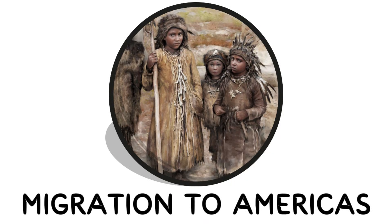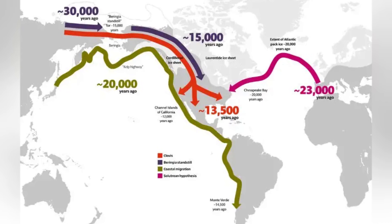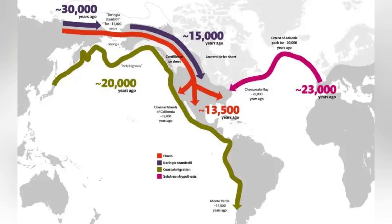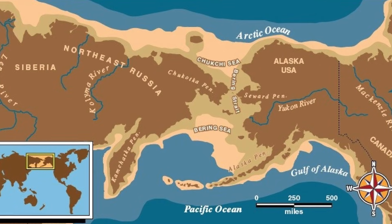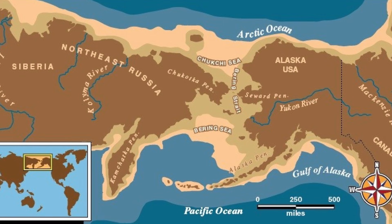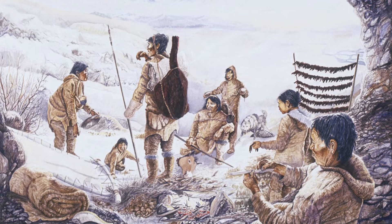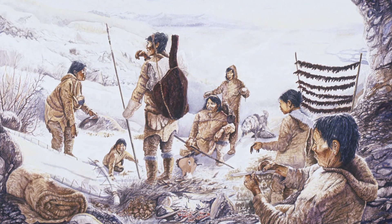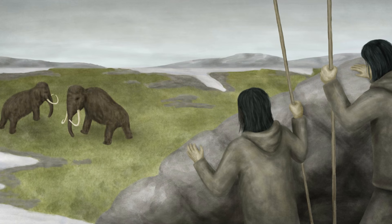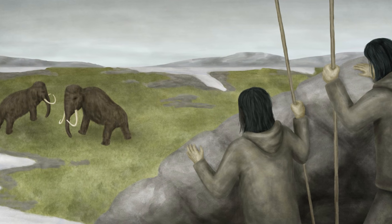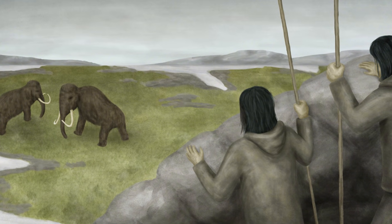Migration to Americas. The migration to the Americas describes the movement of humans from Northeast Asia into North and South America, beginning roughly 20,000 to 13,000 years ago. During the last Ice Age, lower sea levels exposed the Bering Land Bridge, allowing people to move from Siberia into Alaska. Some groups likely paused in this region for thousands of years before spreading southward along coastal routes or through ice-free corridors. Once in the Americas, human populations expanded rapidly, adapting to a wide range of environments from Arctic tundra to tropical rainforests.